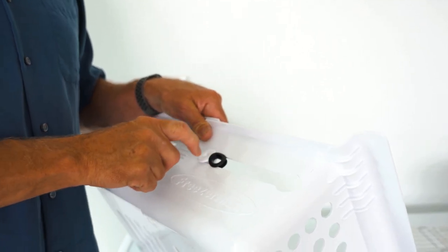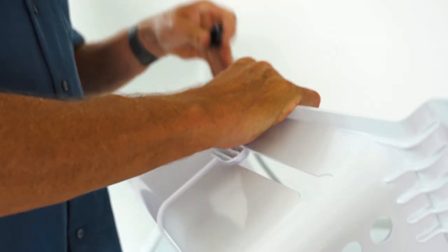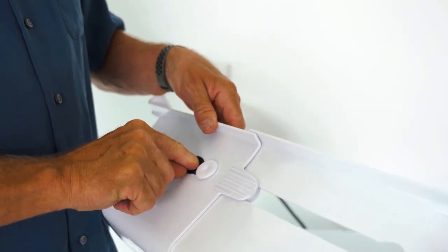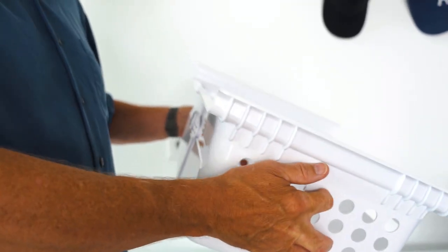Slide it up against this white post and do the same thing on the other side. Slip it into that groove, slide it up against the post. And what happens is it locks that basket in place so it cannot collapse.